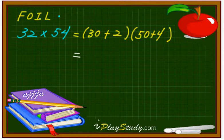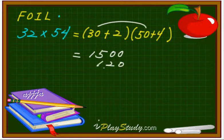First one. So, F, O, I, L. F, f. So, 30 and 50. Which is 15. Then two zeros, right? Very simple. Now, the outside one. See? Outside. Then 30 and 4. Which is 12. Then one zero. That's it.